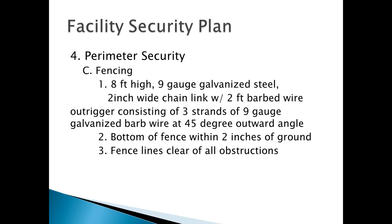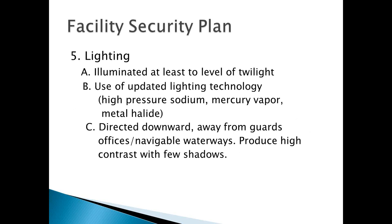Security lighting: when setting up your perimeter lighting, it should shine outward from your perimeter. The lighting should be inside your perimeter — you don't want the light pole sitting outside where someone can just knock off the power cable. It should be illuminated at least at the level of twilight — the level of light just after the sun sets. It's measured in lumens or foot candles.